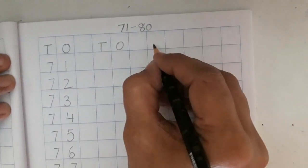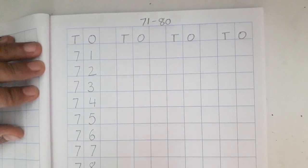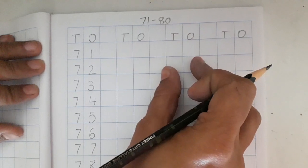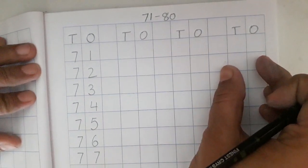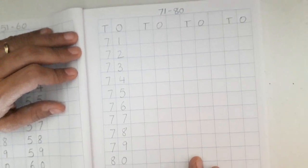Children, this way we are going to write 71 to 80 four times. One here I have shown you. And second time, third time, and fourth time. This way we are going to write 71 to 80.